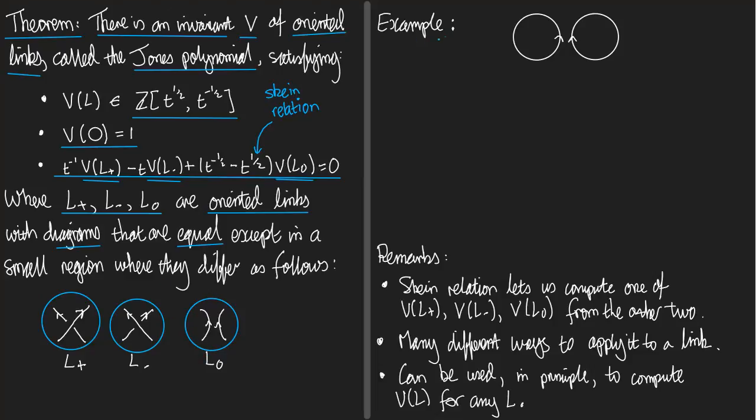Here's an example for you. Let's start with this link here. It's the trivial link with two components. I've oriented the left-hand component anti-clockwise, and the right-hand component clockwise. But of course, out of the four ways of orienting this diagram, they're all equivalent, just by rotating one or other of the components through 180 degrees. So, what can we do with this? We're going to try and apply the skein relation. We have to decide how to make this link into one of the three kinds: L plus, L minus, or L zero.